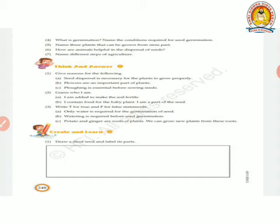Question number two. Guess who I am? I am added to make the soil fertile. Manures and fertilizers. I contain food for the baby plant, I am a part of the seed. Endosperm. Remember, endosperm contains food for the baby plant, it is a part of the seed.